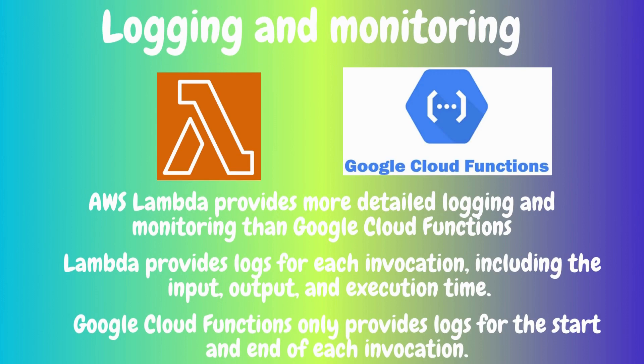Logging and monitoring: AWS Lambda provides more detailed logging and monitoring than Google Cloud Functions. Lambda provides logs for each invocation, including input, output, and execution time. Google Cloud Functions only provides logs for the start and end of each invocation.